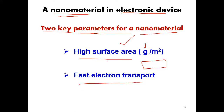For example, if you take graphene and titania, graphene has a higher surface area. This means that one gram of graphene will cover a larger area compared to titania, so graphene is superior in terms of high specific surface area. When you have a large specific surface area, you have more reaction sites and more chances for electrons to interact or to be generated. The second key parameter is faster electron transport — once you generate electrons, you need to transport them from one point to another along a path with minimum chances of recombination.